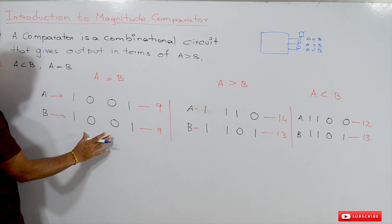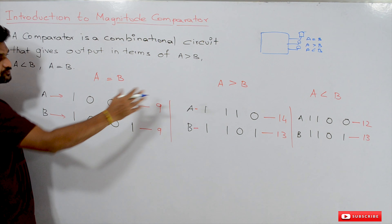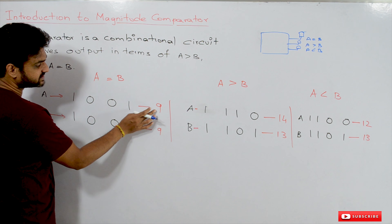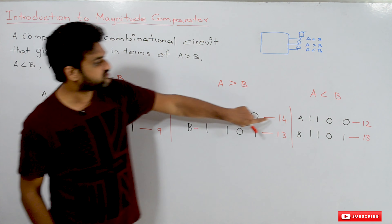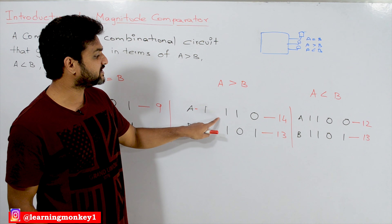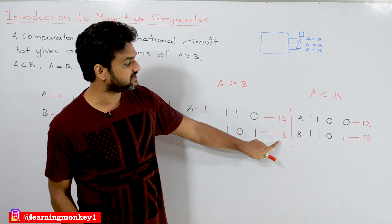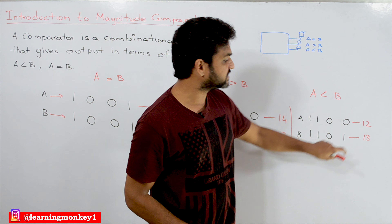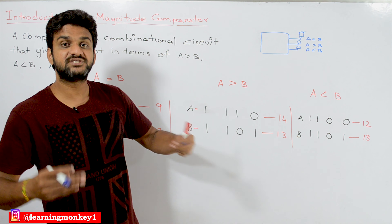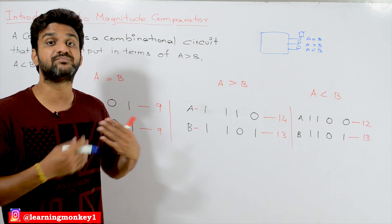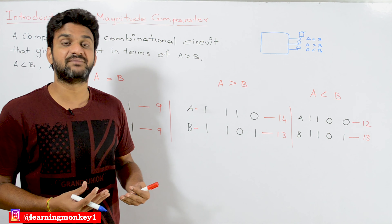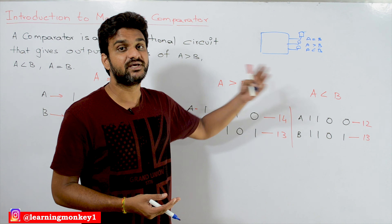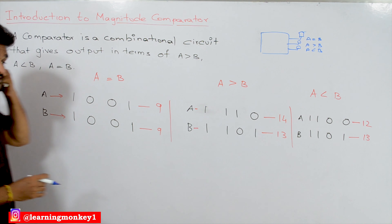Now let's see some examples. There are three different groups of numbers. By visually seeing these decimal numbers we can say A and B are equal in one case. This binary number's decimal equivalent is 14 and this binary number's decimal equivalent is 13, so we can say A is greater than B. This is 12 and this is 13, so A is less than B. We can do this with our decimal knowledge, but how will the circuit for this comparator make this comparison and decision?